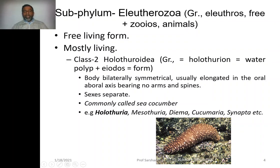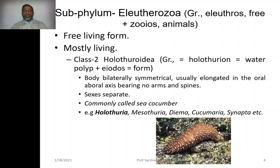They have spines on the body and sexes are separate. Commonly called sea cucumbers. Examples include Holothuria, Myothuria, Thyone, Cucumaria, and Synapta.